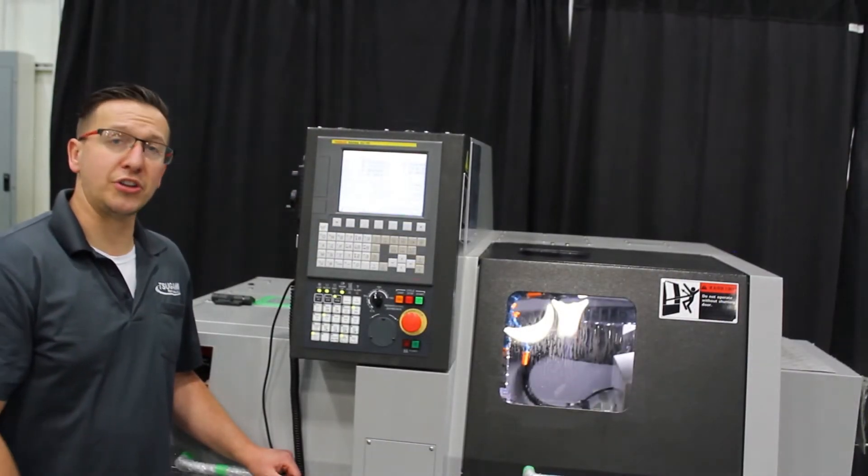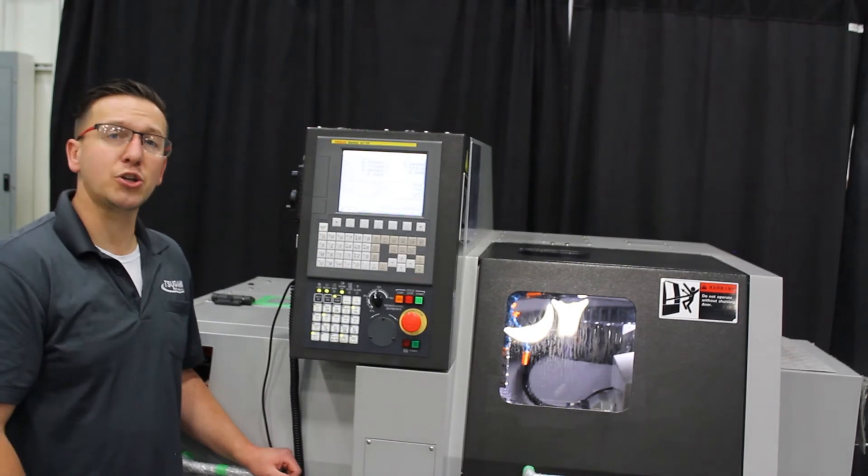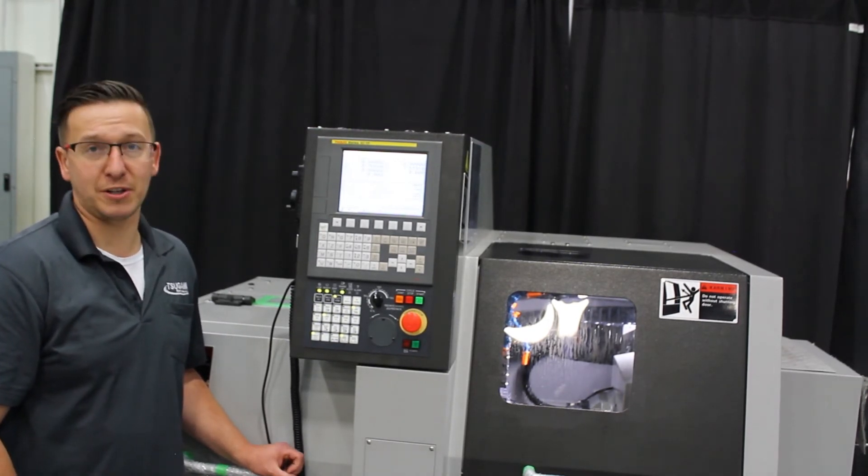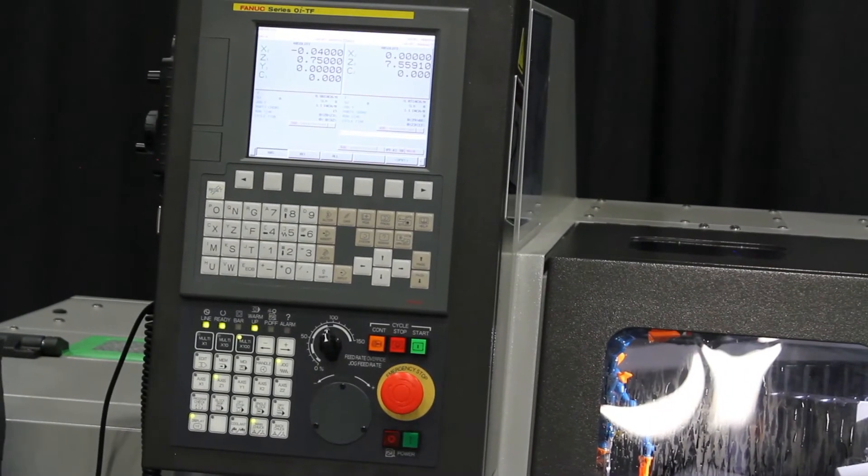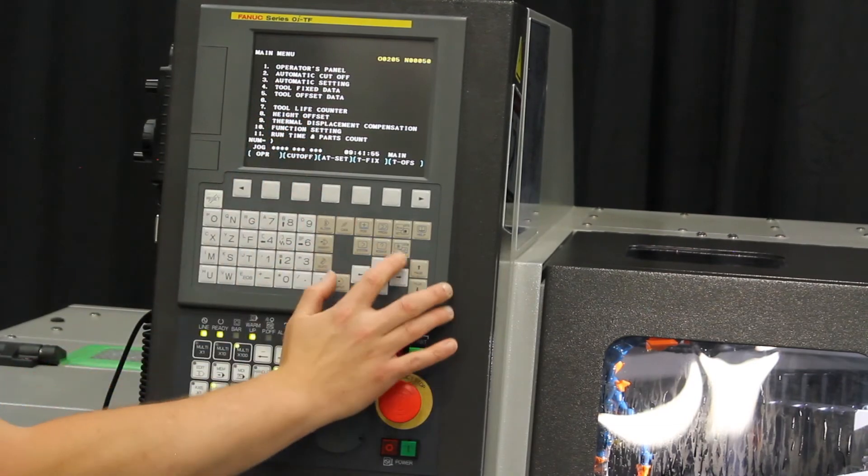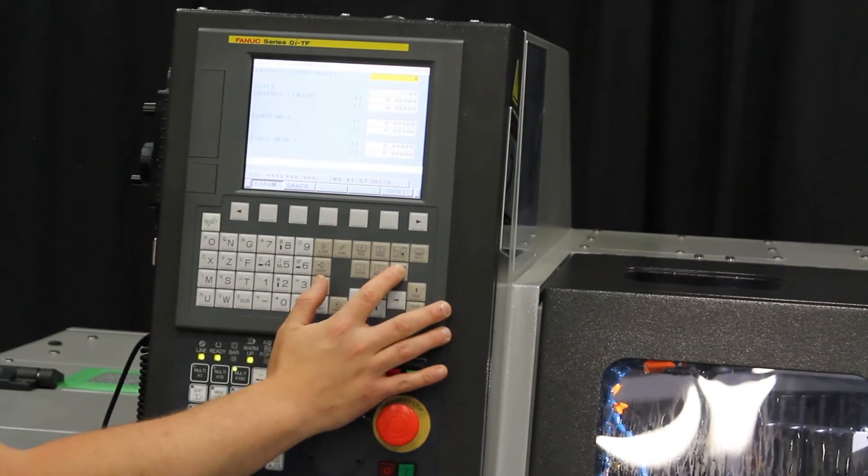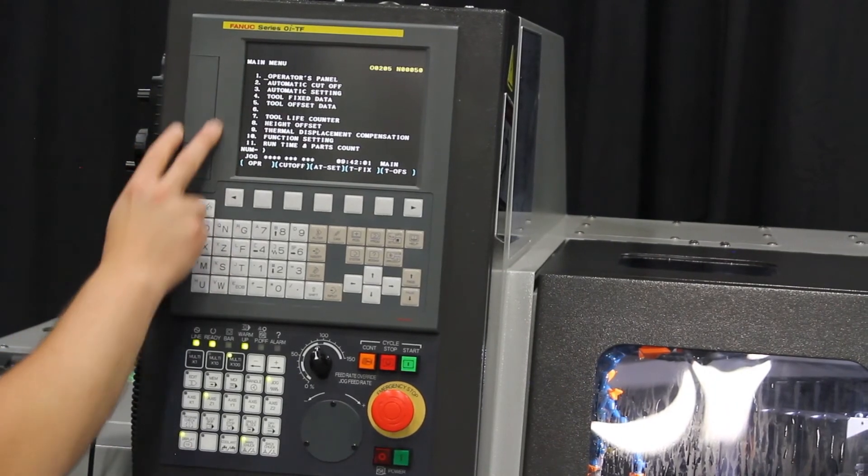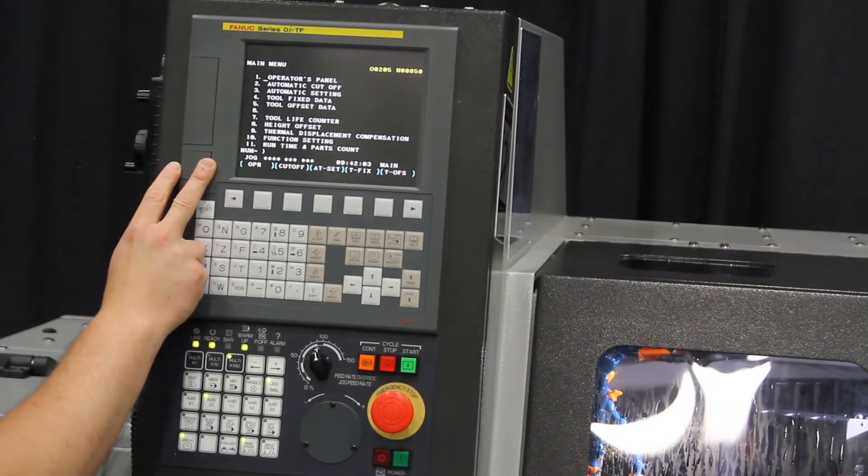And now we are going to go into the control side and show you the parameters and relays you have to change for this to be functional. We are going to start off by hitting the custom graph screen. This menu should pop up. If you get this menu just hit it one more time until you are on the main screen. You will see a bunch of options here available ready for you.